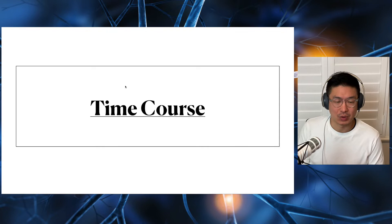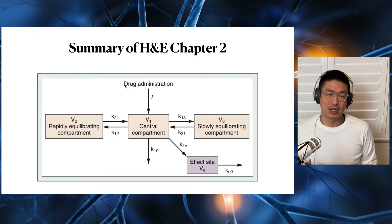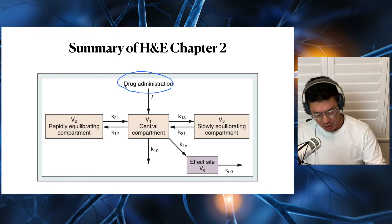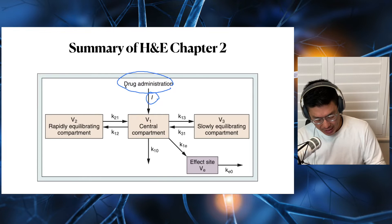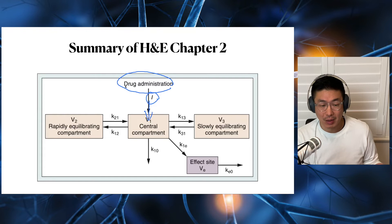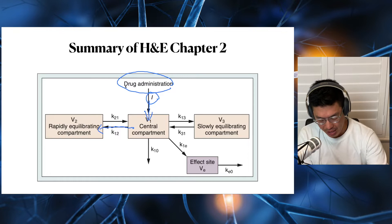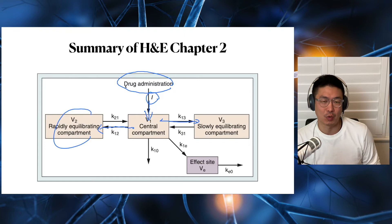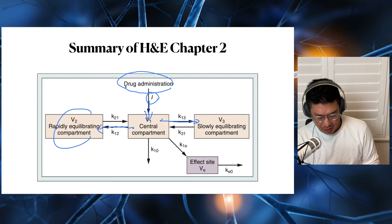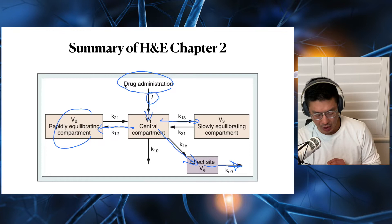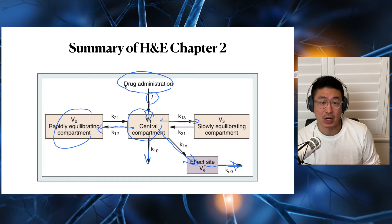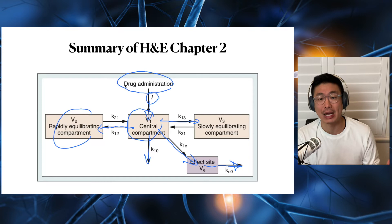The first thing we're going to talk about is time course. Visually, we've got drug administration represented by I for initial, which heads into the V1 compartment. From V1, you get distribution — the most important being V2, the rapidly equilibrating compartment, with V3 more significant for prolonged infusion. After that, drug heads to the effect site, which involves KEO. From the central compartment there's also clearance, represented by the elimination rate constant K1O, and we'll discuss how much of a role that plays with bolus dosing.